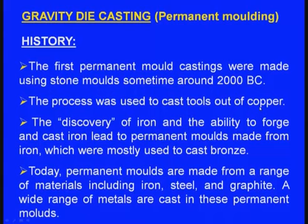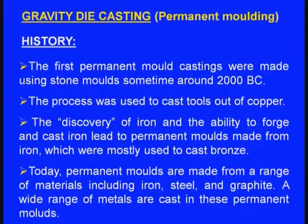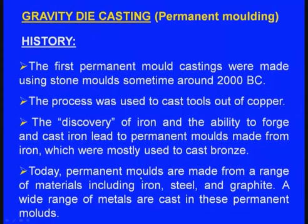The discovery of iron and the ability to forge cast iron led to permanent moulds made from iron, which were mostly used to cast bronze. Later, man learned how to extract, melt, and forge iron components, and even made permanent metallic moulds made of iron. Today, permanent moulds are made from a range of materials including iron, steel, and graphite.